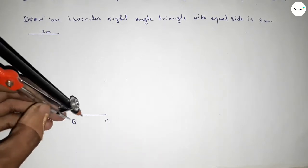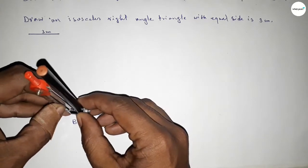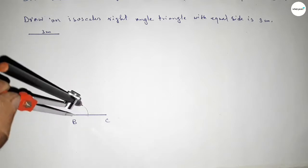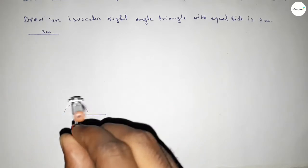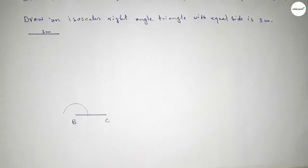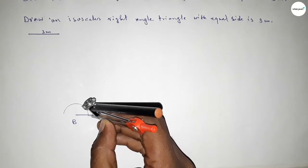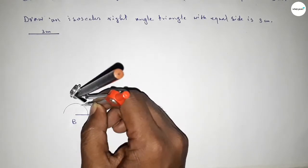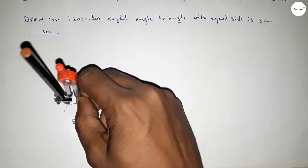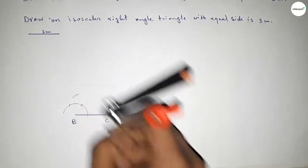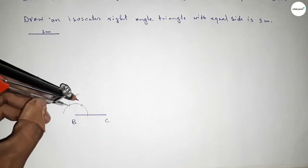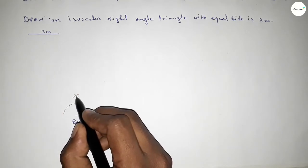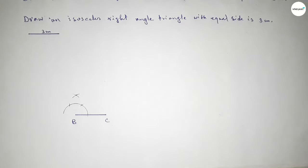Now we have to draw a 90 degree angle on point B. Putting the compass on point B, taking any length, and drawing an arc. Then with the same length, putting the compass here and cutting here. Again with the same length, putting the compass here and cutting here and drawing an arc. Again with the same length, putting the compass on this point and cutting here. So both the curves intersect at a point.